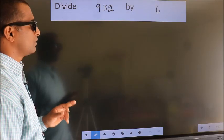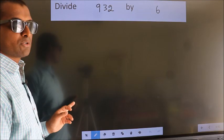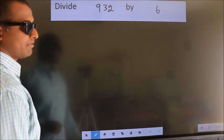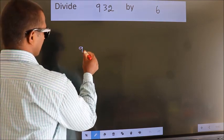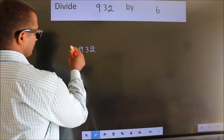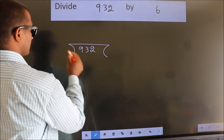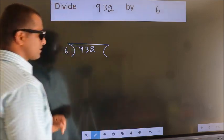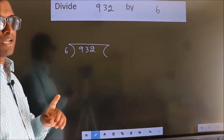Divide 932 by 6. To do this division, we should frame it in this way: 932 here, 6 here. This is your step 1. Next.